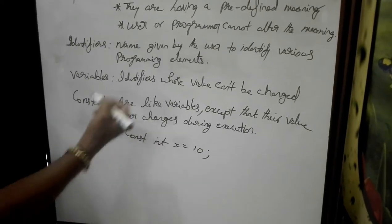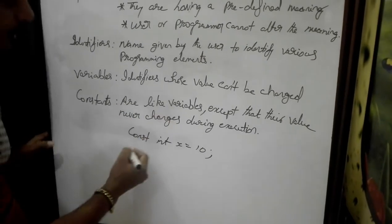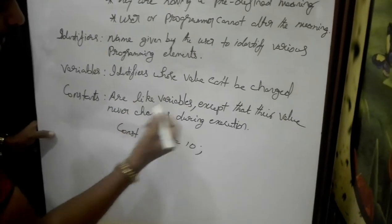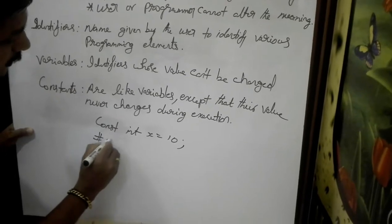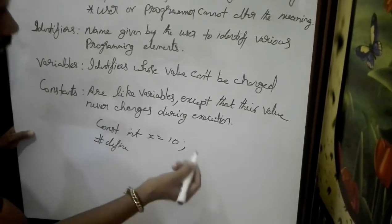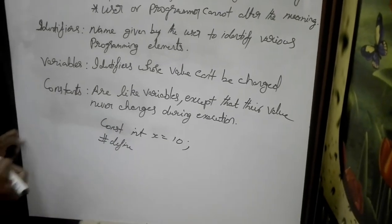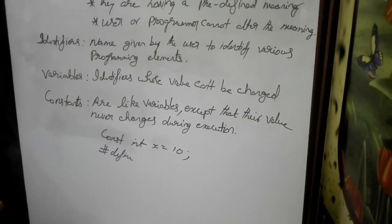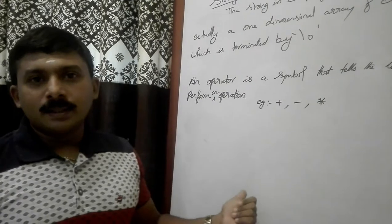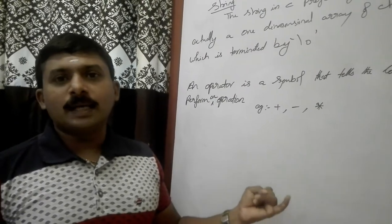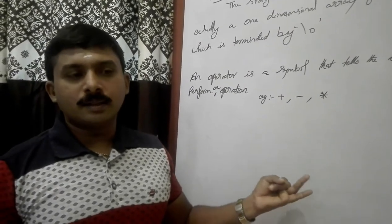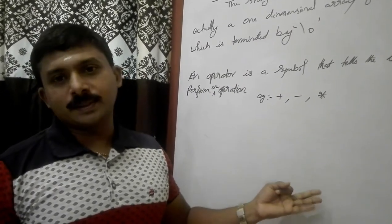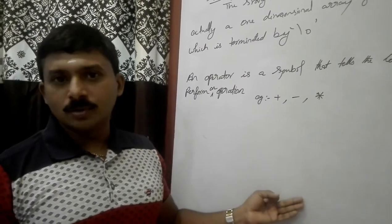The second method is hash define (#define). We are going to define these two methods. We are going to define a constant. The token categories are: keywords, identifiers, and constants.